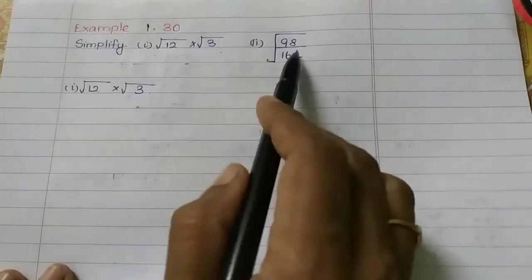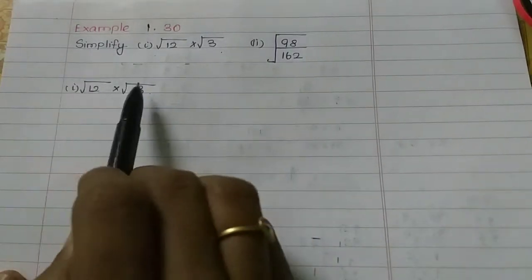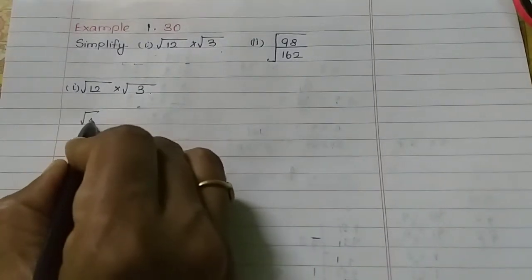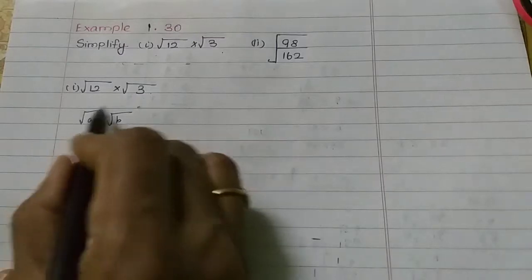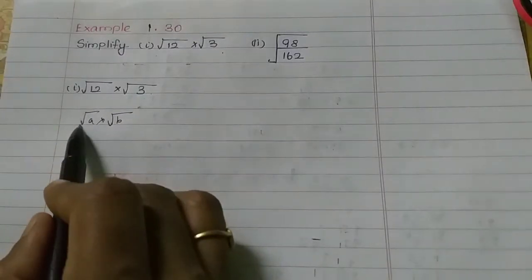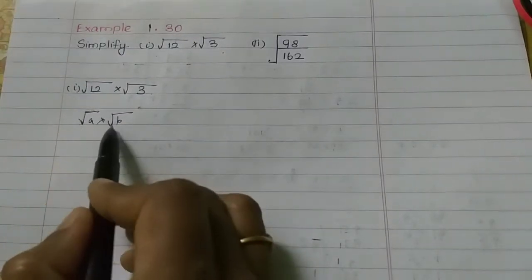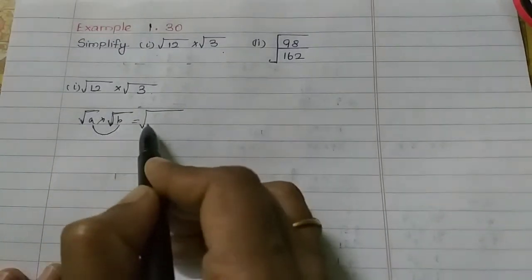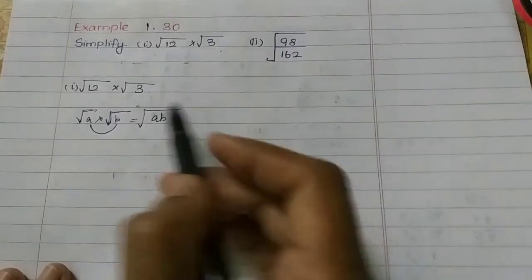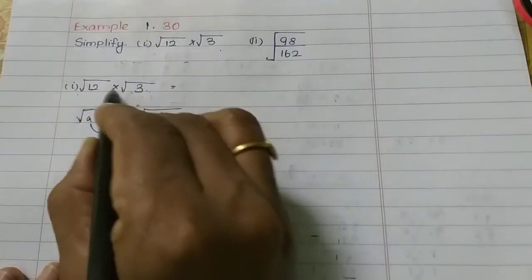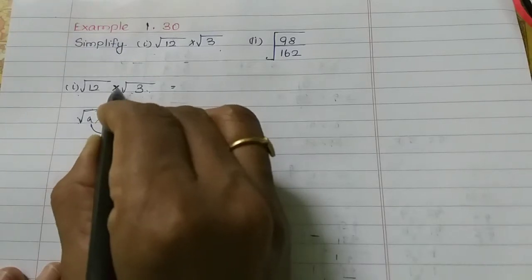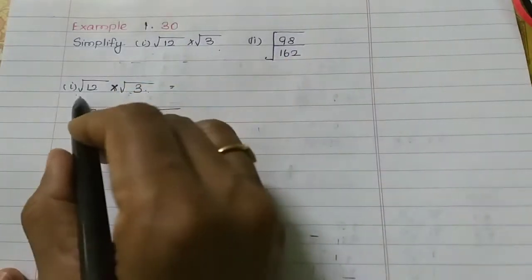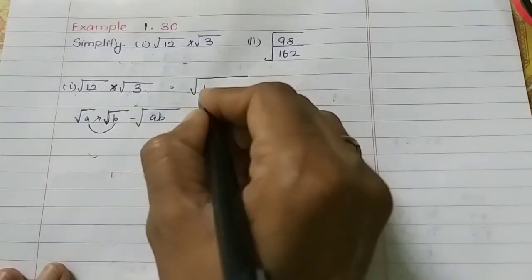We will see root A into root B — the product rule. The order is equal: this is square root and here is square root. We can multiply the base. Here is square root and here is square root, so it can be done in multiplication. So we will see square root of 12 into 3.